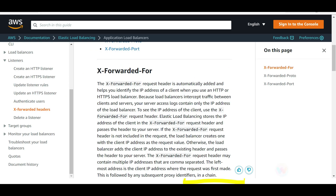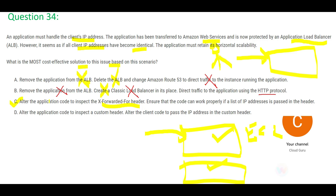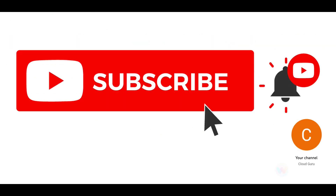Option C says use the X-Forwarded-For header. This helps you identify the original IP address of a client — which is exactly what we want, since the IP addresses appear identical. So Option C looks correct. Option D says inspect the header and alter the client code to pass the IP address in a custom header, but the problem is still not solved — the IP addresses are identical, so adding them to a custom header won't help you correctly identify them. So Option C is the answer.